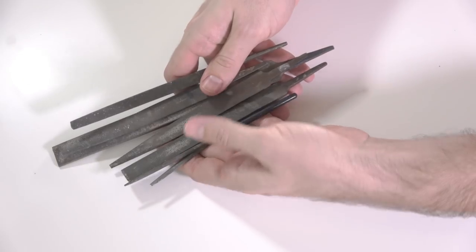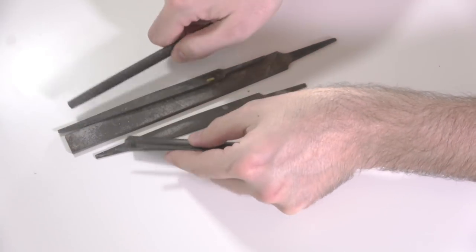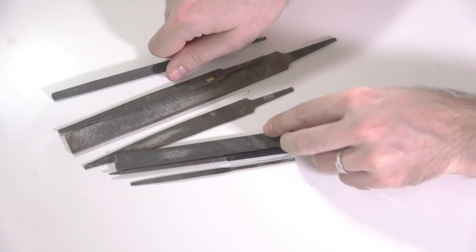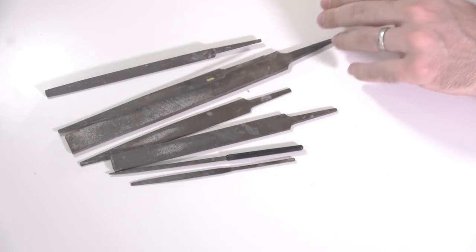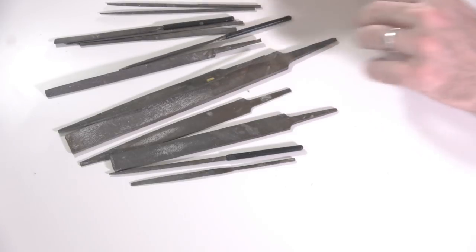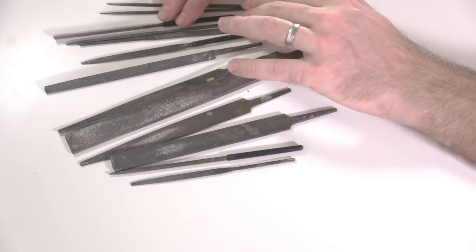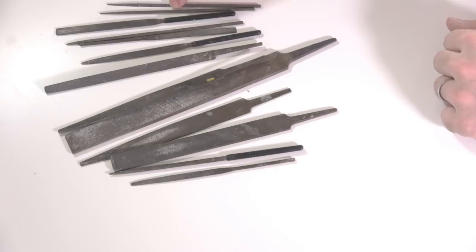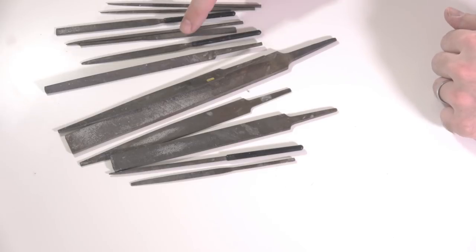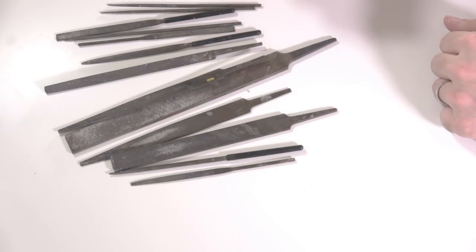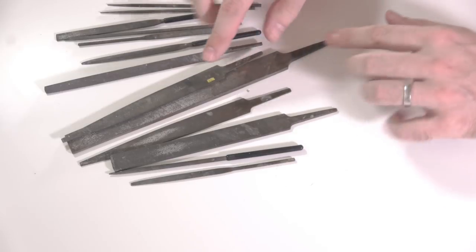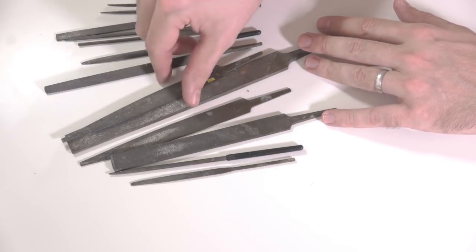Continuing on with the essential stuff then, we need a selection of files, and I've got quite a few here. I've got a few smaller ones here as well. So you can get a cheap file set, I've got triangle, I've got round, I've got square, flat files.